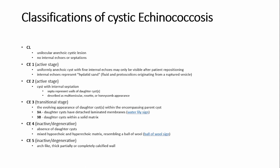CE4 is called the inactive or degenerative stage. You see absence of daughter cysts mixed with hypoechoic and hyperechoic matrix, resembling a ball of wool — called the ball-of-wool sign. Finally, CE5 is also the inactive or degenerative stage. In this category, you see thick, partially or completely calcified walls.